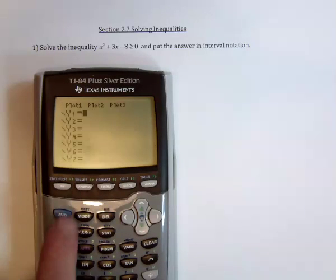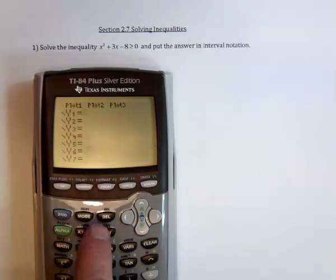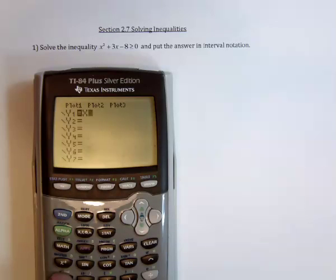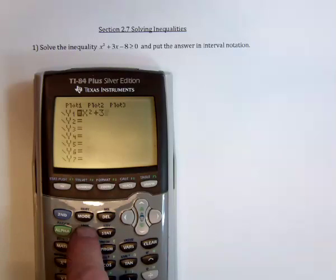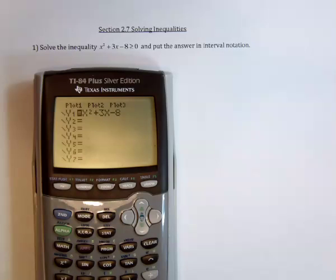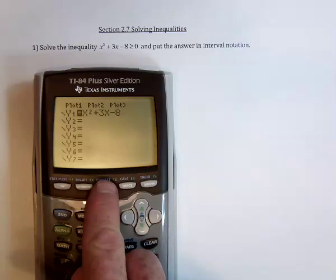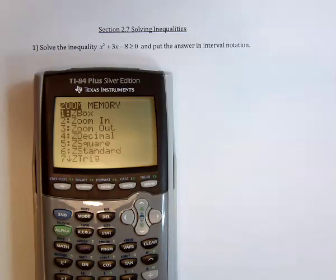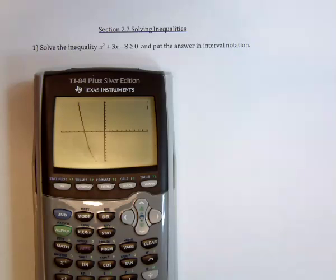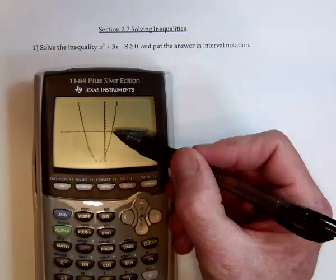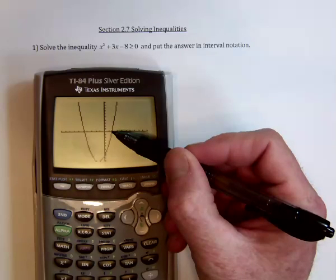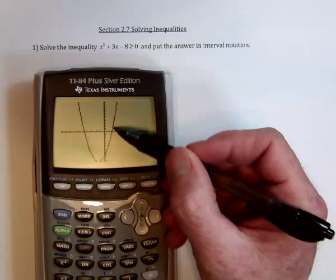Before doing the math, I want to just take a look at the graph so I've got an idea as to what's going on. x squared plus 3x minus 8 is going to be the parabola and I'll just go to Zoom Standard. Here's the parabola and so it is positive or bigger than or equal to zero, I should say, in this area right here.